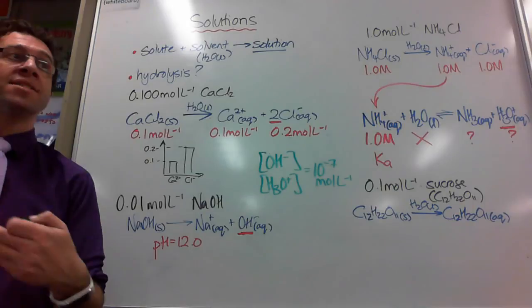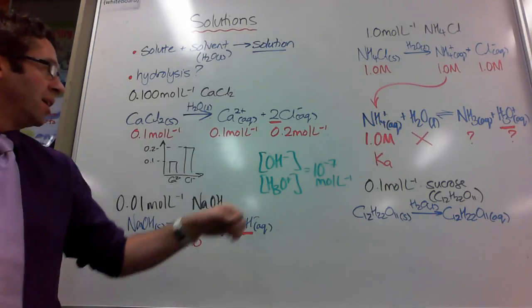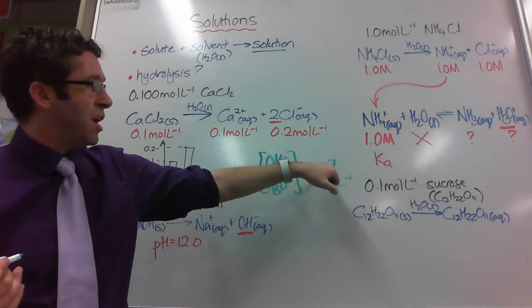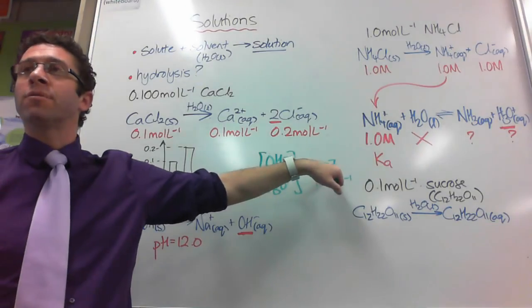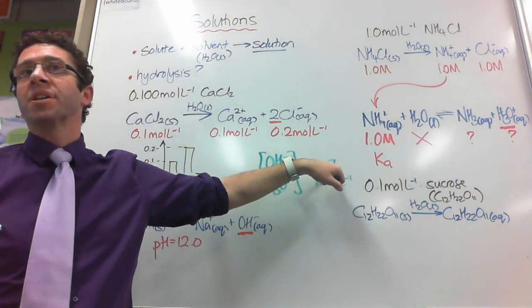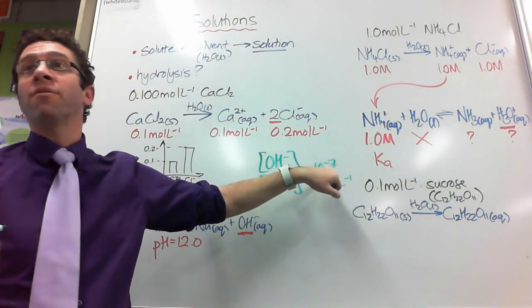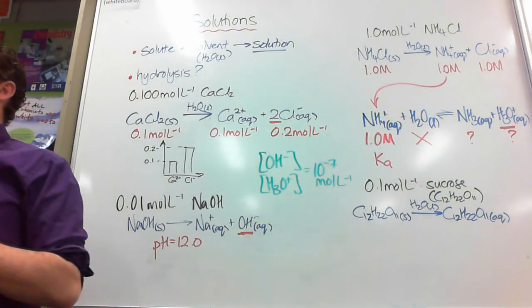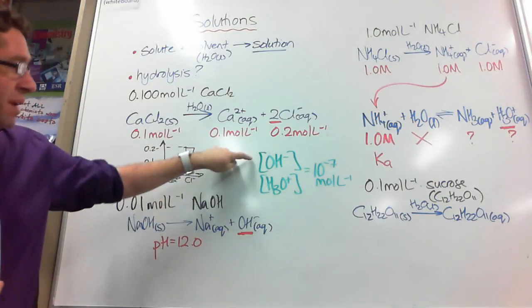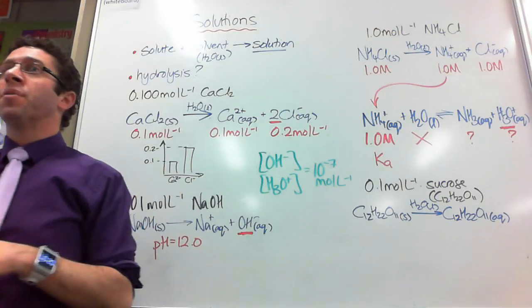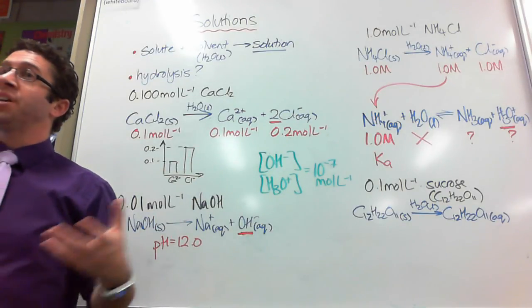at 10 to the negative 7 moles per litre always because that's the amount that water hydrolyzes itself. 10 to the negative 7. Now you'll notice that magical number 7. I've done it in green for a really good reason. 7 is neutral on a pH scale because 7 is negative log of that number there. So these two have to be a concentration of 10 to the negative 7 moles per litre if the solution is neutral.